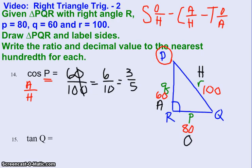Then the decimal value, hopefully you have your calculator handy. You'll just punch in 3 divided by 5, and it gives you 0.6. So the ratio is your fractions, and then the decimal value. And since it says to the nearest hundredth, technically we should say 0.60.